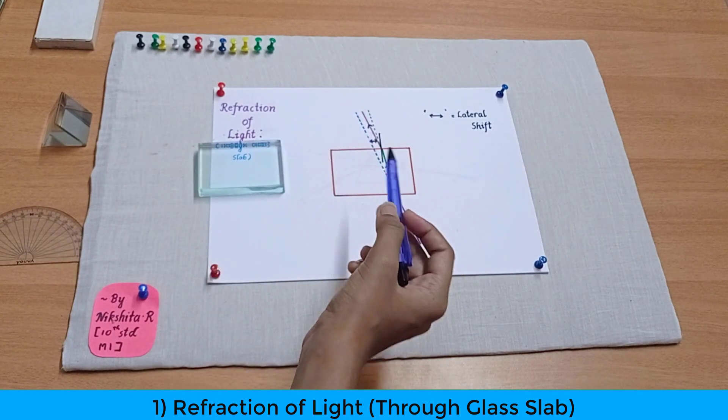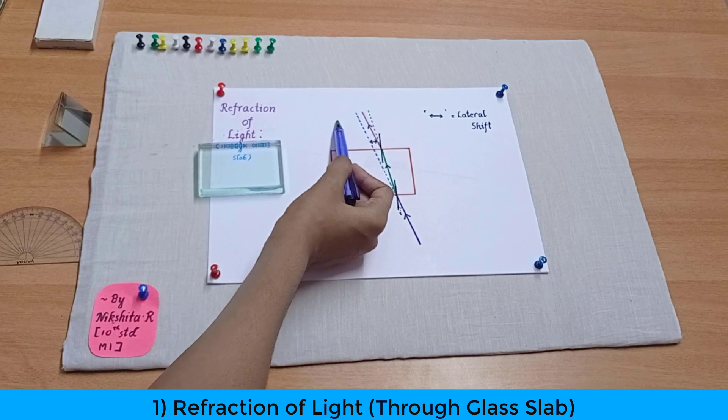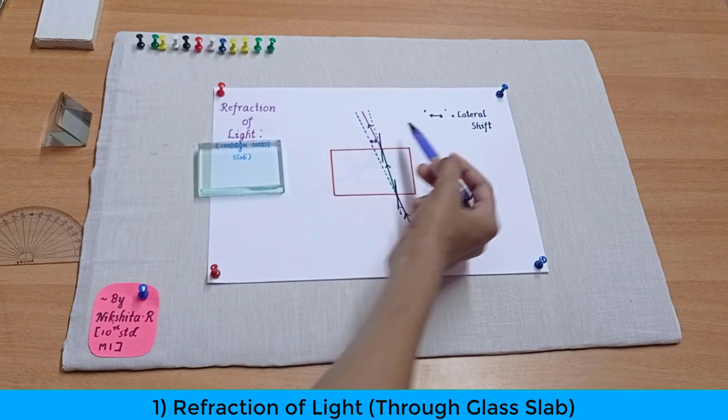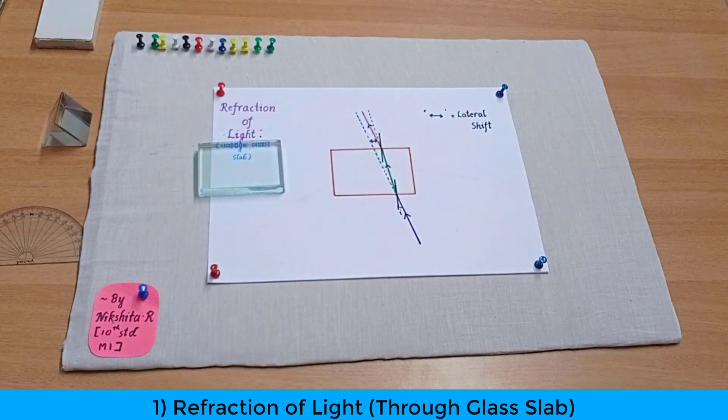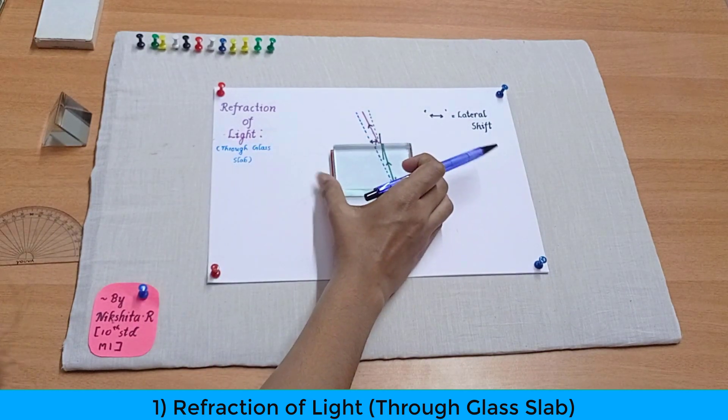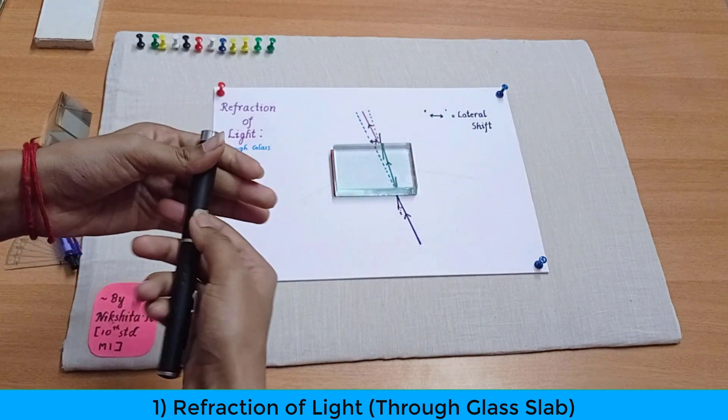That's because when light moves from a denser medium to a rarer medium it gets bent away from the normal. So this is the normal over here and this is the emergent ray. Okay so now just observe once again and you will be able to see it very clearly.